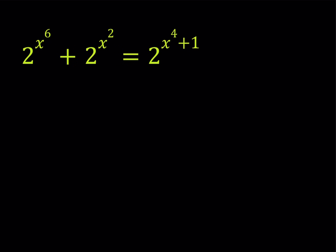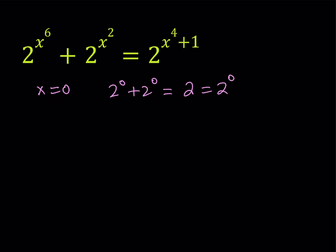Since this equation is not standard, we can't really use the general rules here. But we can find some solutions by inspection or trial and error. For example, if you replace x with 0, you'll notice that it works, because 2 to the power of 0 plus 2 to the power of 0 equals 1 plus 1, which is 2, and that equals 2 to the power of 0 plus 1. So x=0 works.